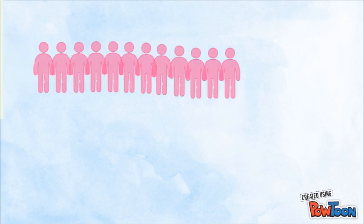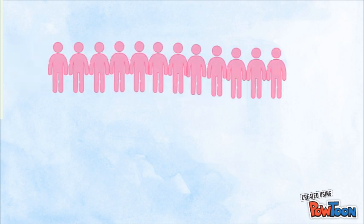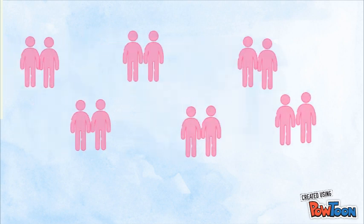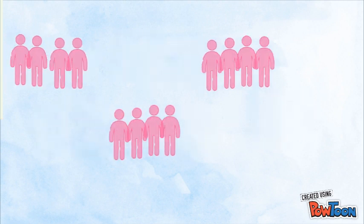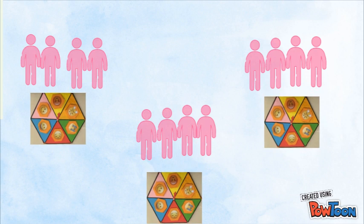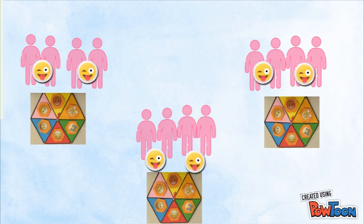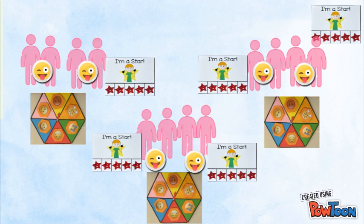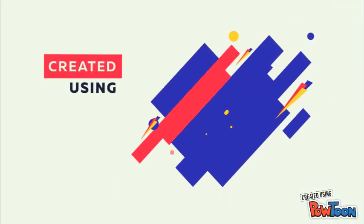Here's how to play the game. First, the teacher needs to divide the students into pairs. Then the teacher has to group the pairs into three different groups. Each group will be receiving a wheel of situations, and each pair will be receiving an emoji stick.